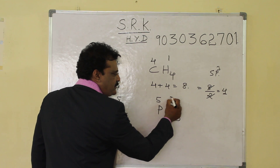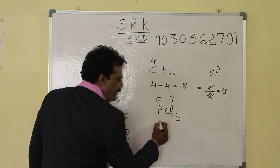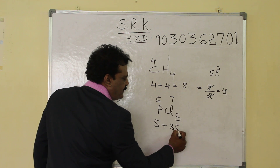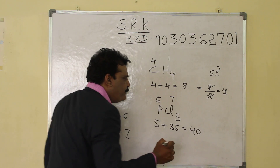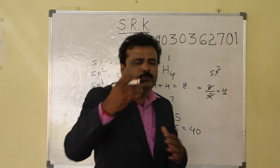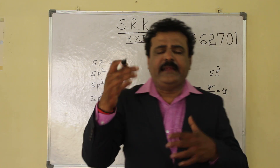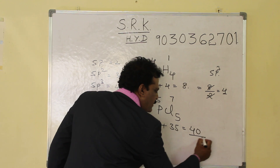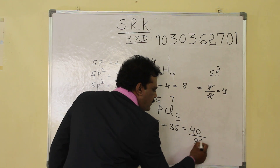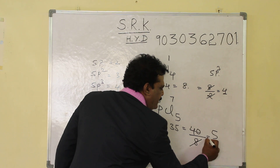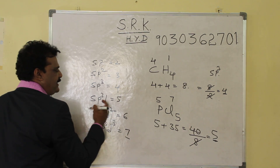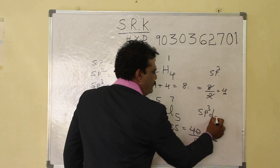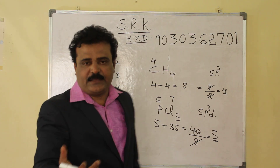Second example: PCl5, phosphorus pentachloride. Phosphorus belongs to the fifth group and chlorine belongs to the seventh group. One five is five, five sevens are thirty-five, total forty. Forty is beyond eight, so divide by eight: 40 divided by 8 is 5, and 5 means SP3D.